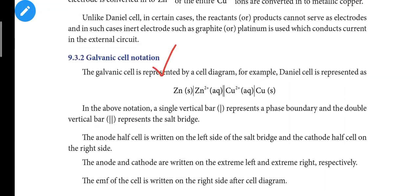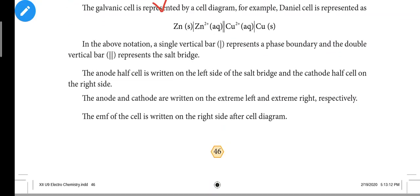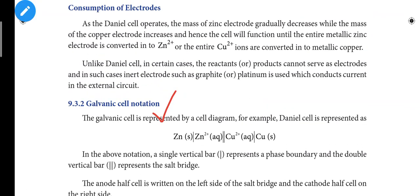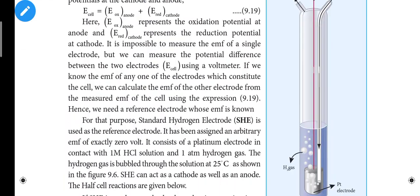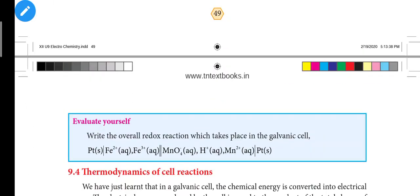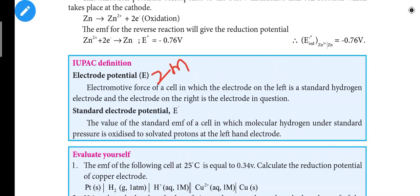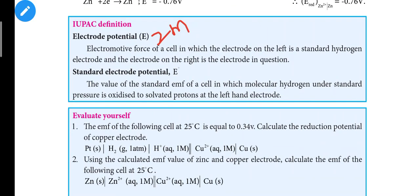Important parts are marked. Next, page 46 covers galvanic cell notation with one equation. Page 49 discusses electrode potential and standard electrode potential (E, E0) with IUPAC definitions worth two marks.